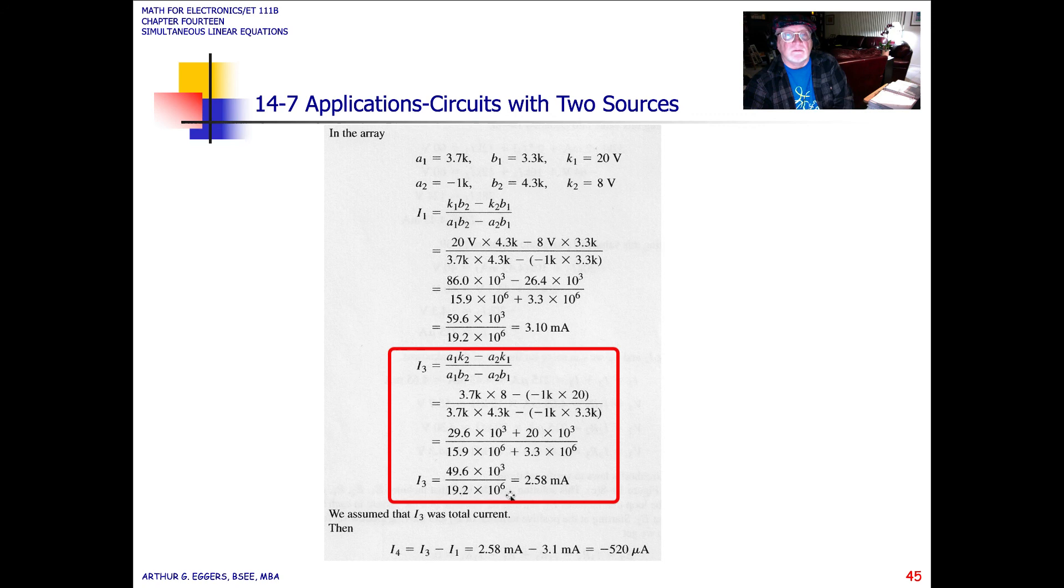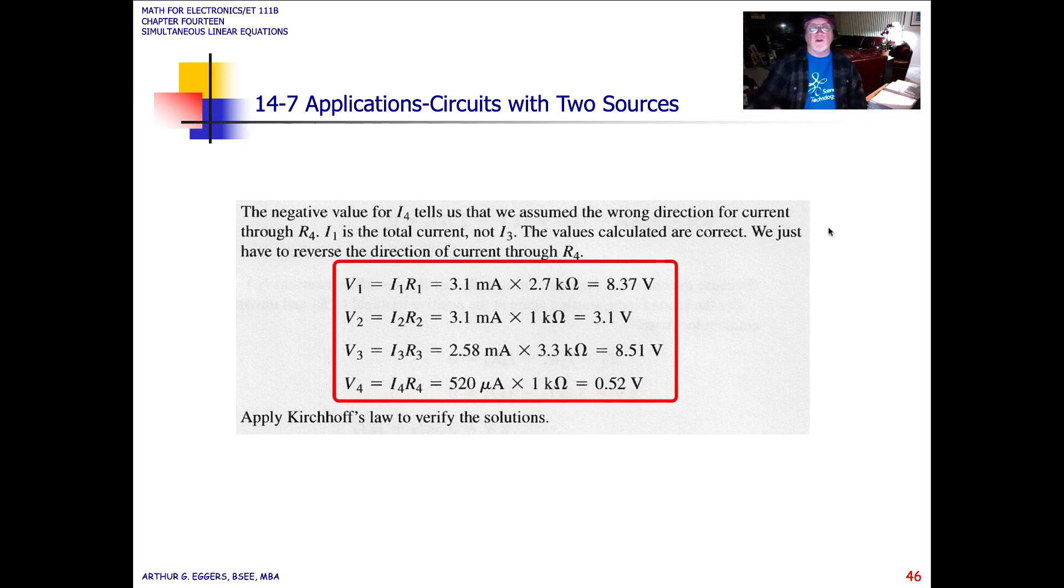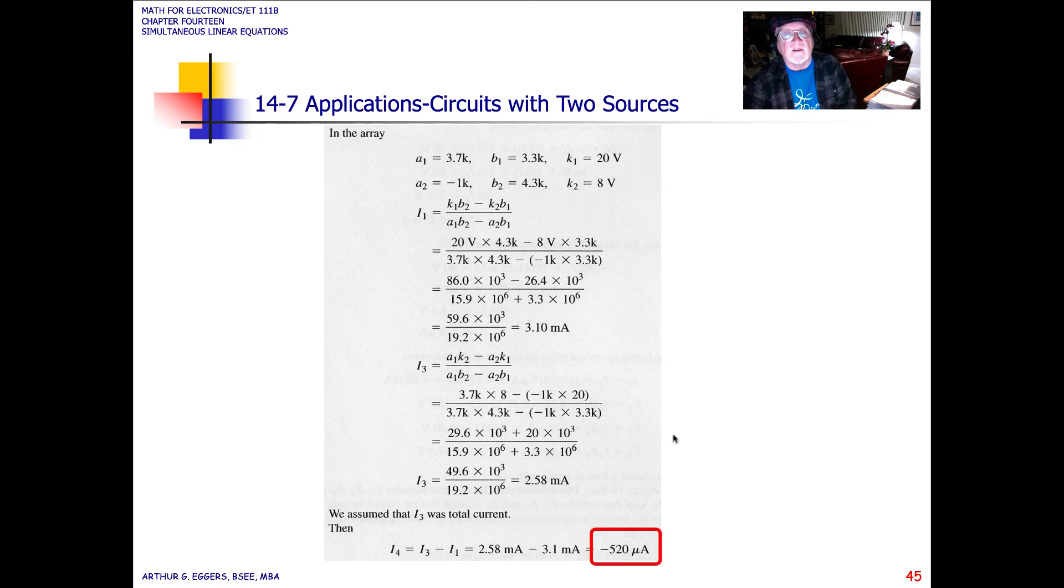And solved finally by saying that the current through I4 is equal to the difference in I3 and the value of I1 above. Okay, the negative value of I4 then tells us that we assume the wrong direction. So this was something that you were warned of, and to be careful, and the author is just trying to show you that it can happen, and you have to be aware if you end up with a negative value that you chose the wrong direction for a current.